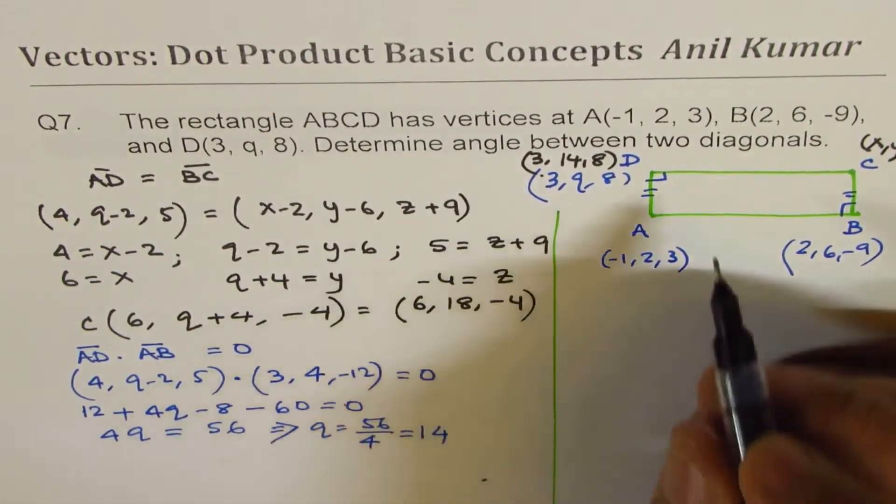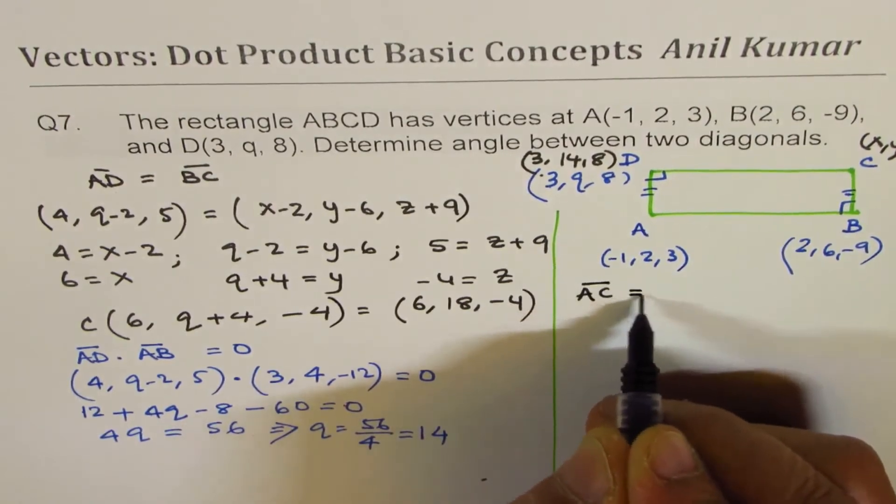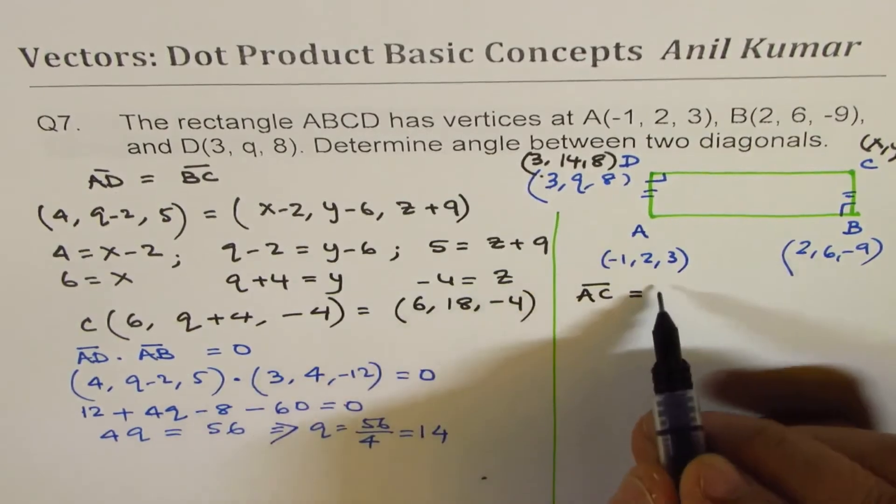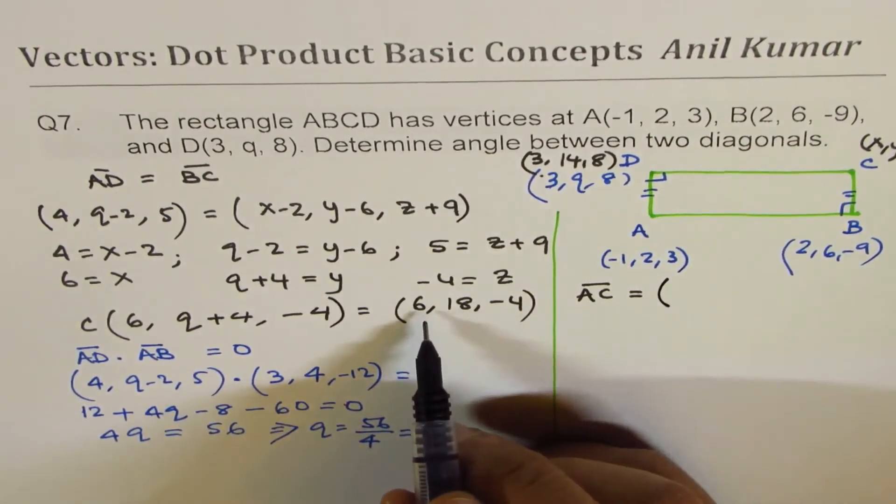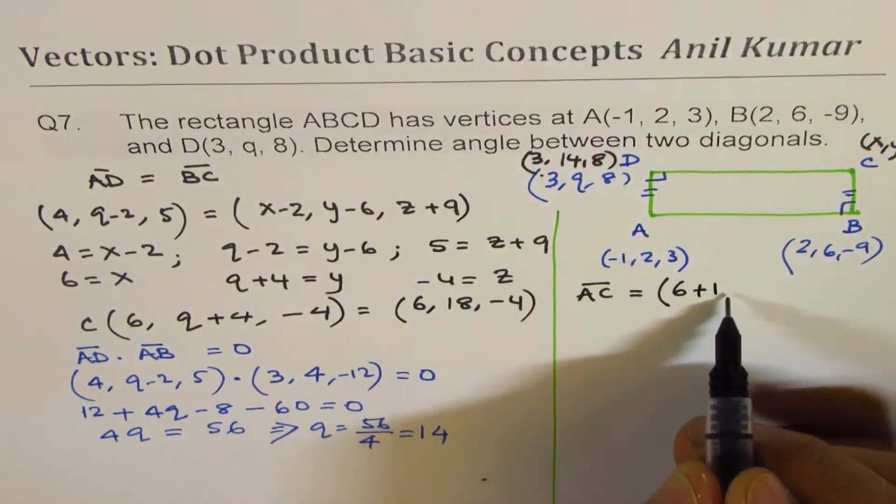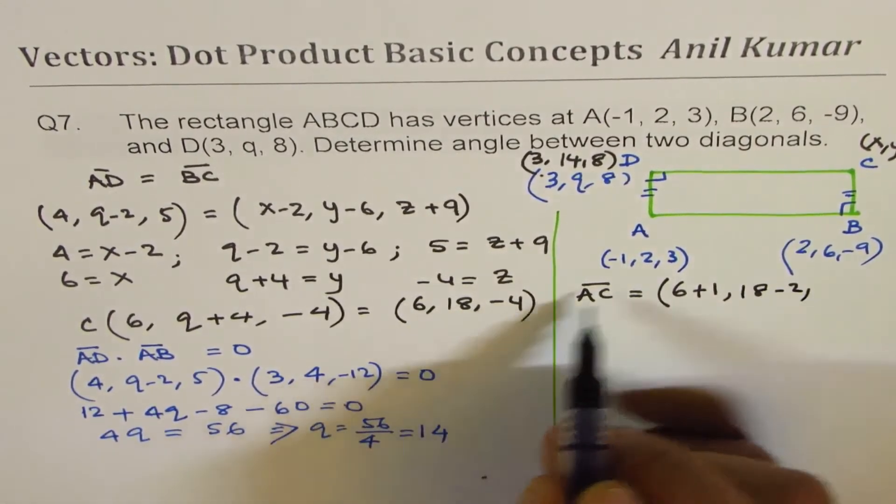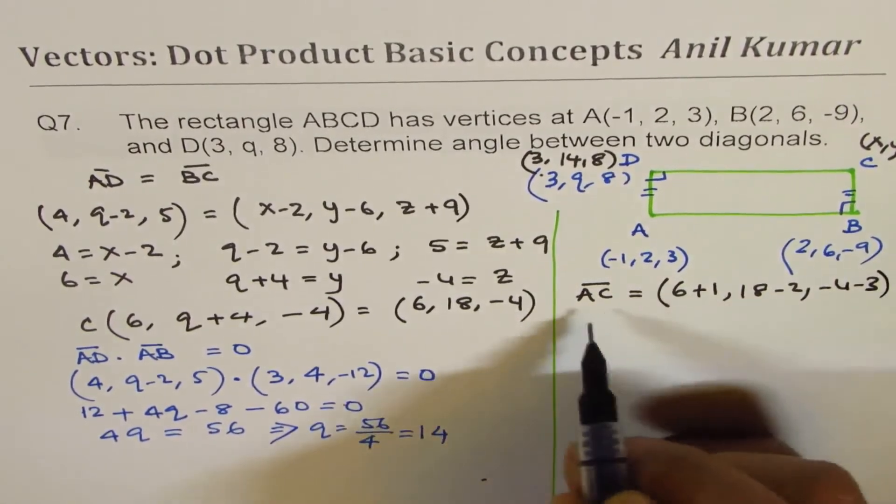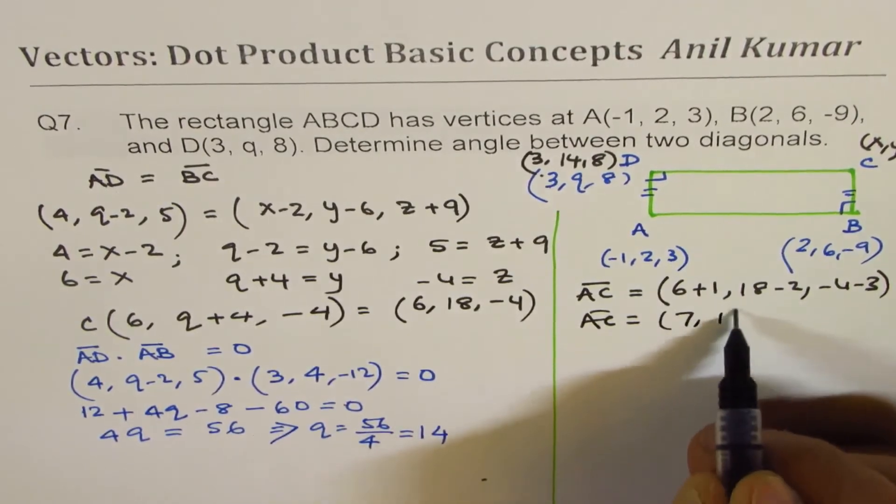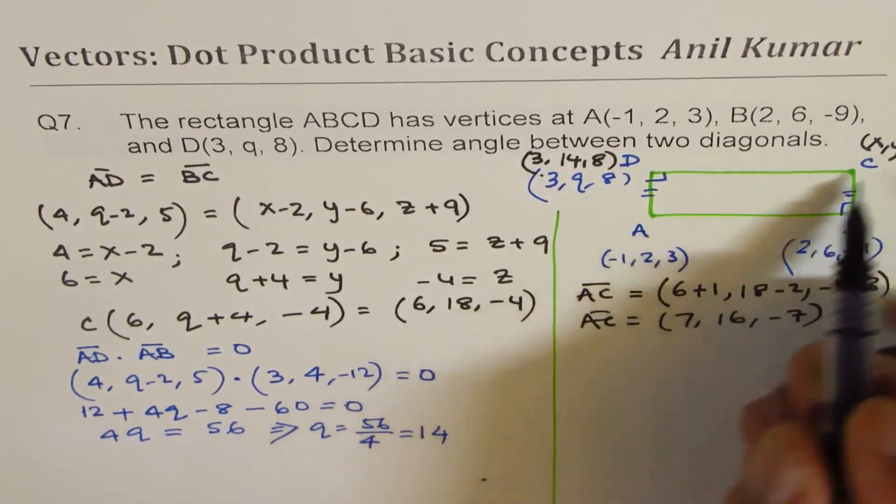So diagonal AC, what is AC equal to now? Diagonal AC is (6, 18, -4) minus (-1, 2, 3). So AC is (7, 16, -7).